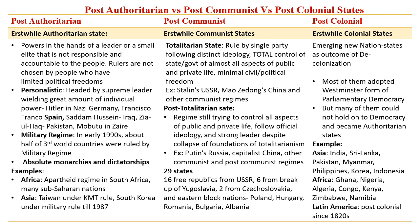Post-totalitarian state: totalitarianism ढह चुका है, उसके foundations खत्म हो चुके हैं, लेकिन जो वहाँ का regime है it is still trying to control all aspects of public and private life, follow official ideology and strong leader despite collapse of foundations of totalitarianism। Example: Putin का Russia, capitalist China। 29 post-communist states में 16 free republics from USSR, 6 from break-up of Yugoslavia जैसे Croatia, Serbia, Macedonia, Kosovo, Bosnia-Herzegovina, दो Czechoslovakia से — Czech Republic और Slovakia — और Eastern Bloc nations जैसे Poland, Hungary, Romania, Bulgaria, Albania।